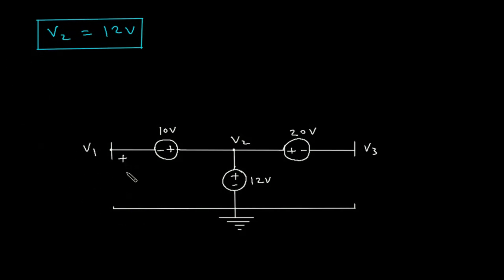This will be positive, negative. Let's say this is loop number 1. This is loop number 2. This will be positive. This will be negative.